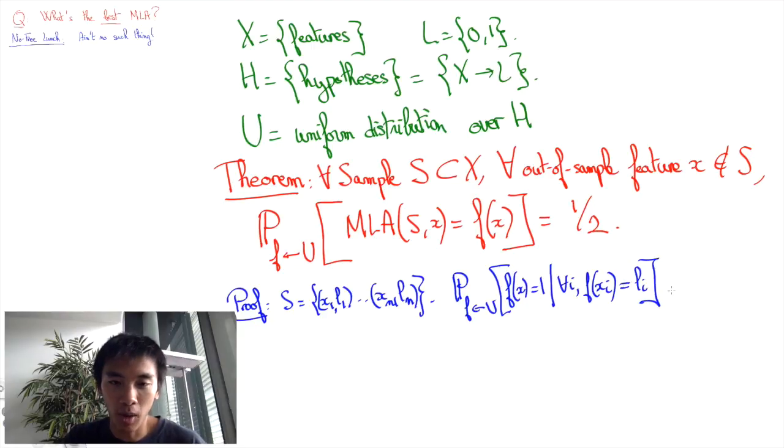In technical terms, the probability of F of X conditioned by the fact that we have observed S is not changed. It's the same as the probability distribution of F of X itself. So the odds of F of X being 0 and of being 1 are both still one-half. Thus, whatever our prediction MLA of S and X is, the probability of it being the value of F of X will be one-half.